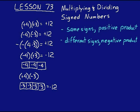The same rules apply for division as well. If you had positive 6 over positive 2, you know that would equal a positive 3. If you had positive 6 over negative 2, that is equal to a negative 3.